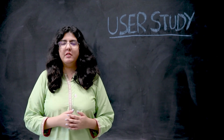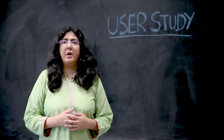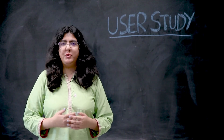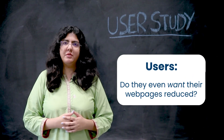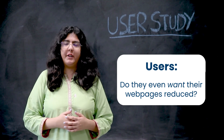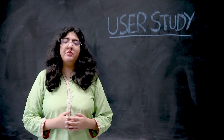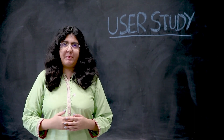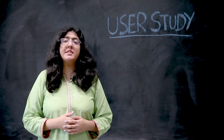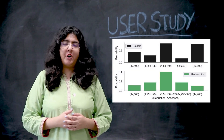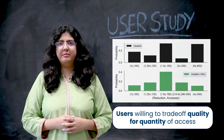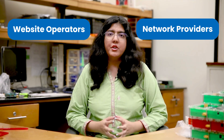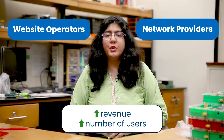Let's move on to the second question: what do stakeholders stand to gain from web equity? First, let's talk about users — do they even want their web pages to be reduced? There exists a trade-off between web page quality and the number of accesses. We conducted a user study with 100 participants, showing them 10 pages with varying levels of reduction, and found that a significant number were willing to trade off web page quality for a greater number of accesses. There are two other main stakeholders: website operators and network providers. They will both gain more revenue since lowering the barrier of entry to the web will bring more users online.